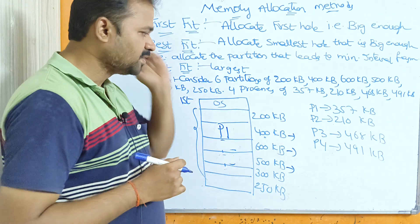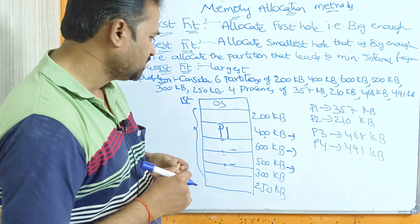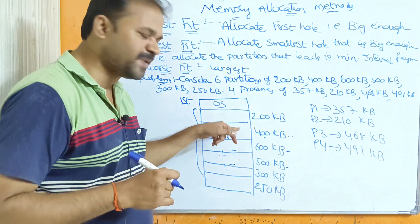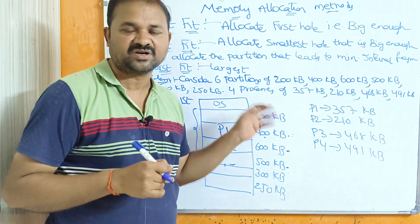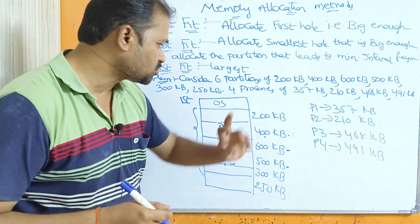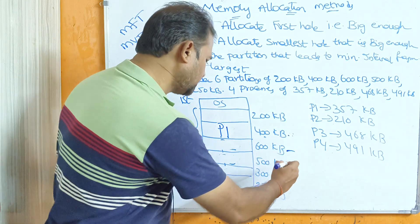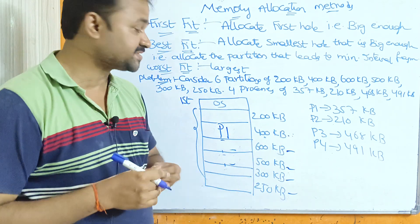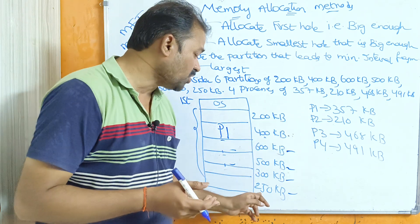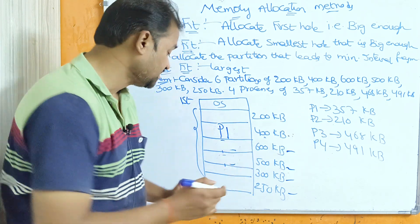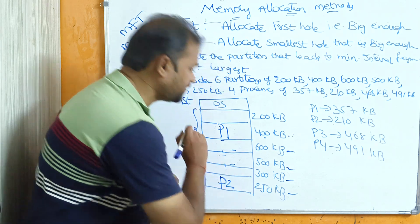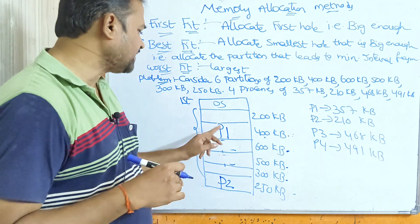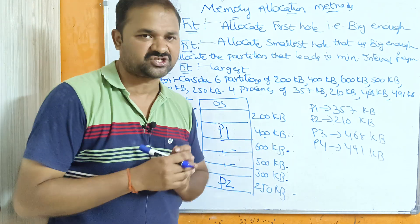For P2 (size 210 KB), we scan all partitions except the occupied 400 KB partition. P2 can fit in 600, 500, 300, and 250 KB partitions. Out of these, 250 is the smallest partition that is big enough, so we store P2 in the 250 KB partition.